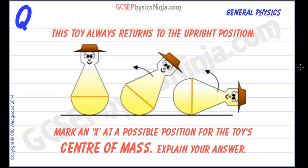The stability of an object depends not only on the size and dimensions of the object but also on its position. This toy always returns to the upright position, a special case where no matter which position it's in, it always returns to upright. We are asked to mark an X at a possible position for the toy's center of mass and explain the answer.